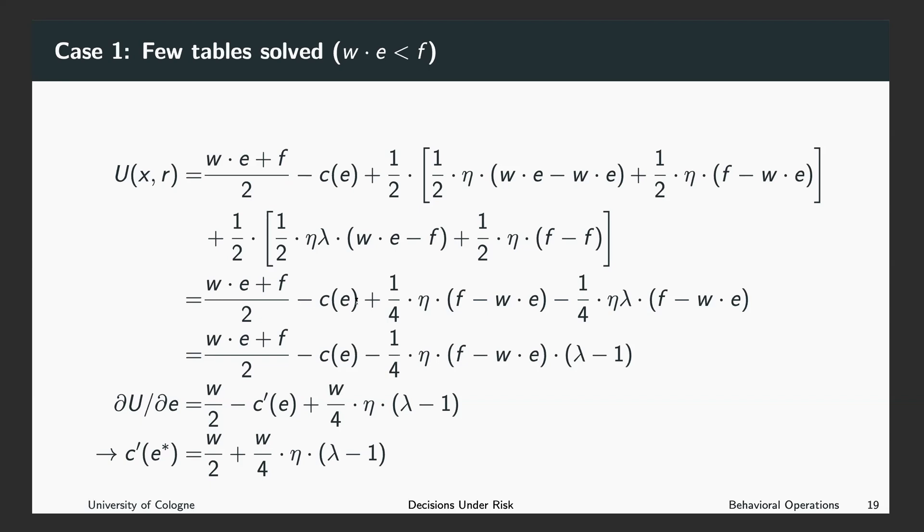The payments stay the same. With probability one over four, we expected the piece rate to be paid, but received the fixed payment, which is better than our reference point, the piece rate. So in this case, we benefit.